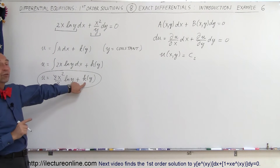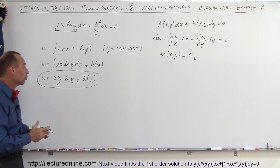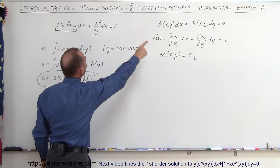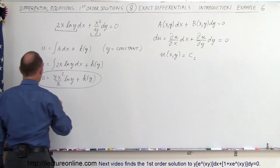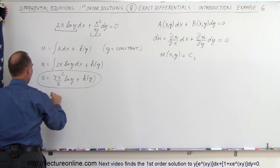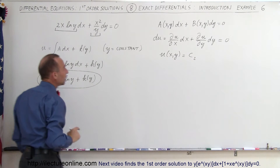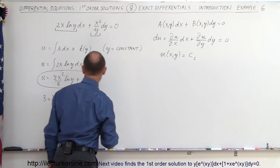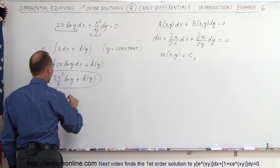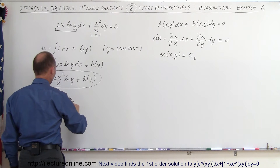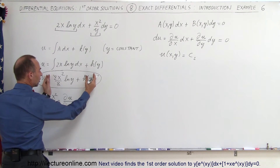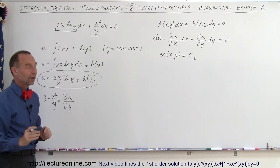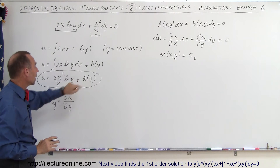We don't know what k of y is, but we can find it. We know that B, which equals x squared over y, must also equal the partial derivative of the general solution u with respect to y. So we can set x squared over y equal to the partial of u with respect to y, and solve for the unknown k of y.